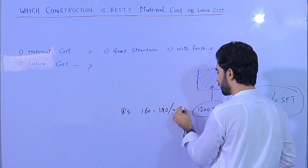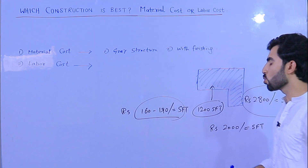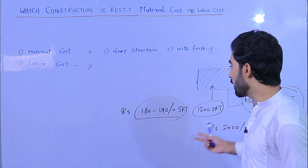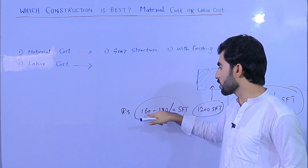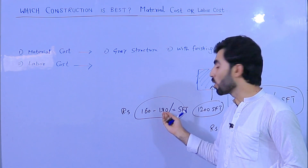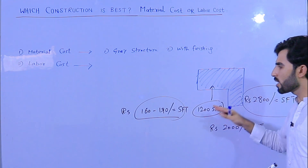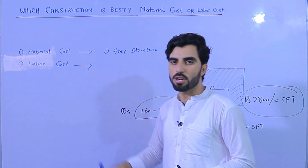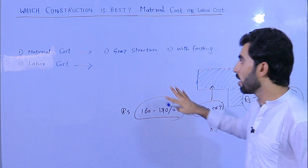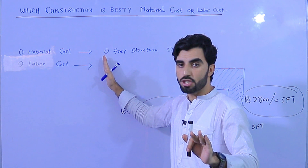That is 160 to 190 rupees per square feet for covered area. There are different categories in the work. Many contractors will include plastering, flooring, and other finishes within the 190 rupees rate. So this is all on the basis of labor cost.